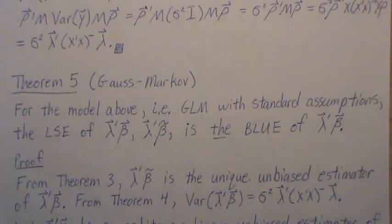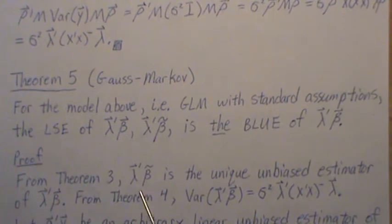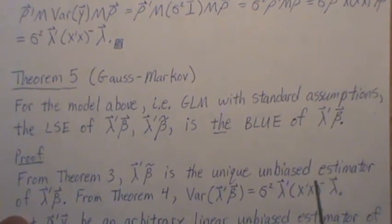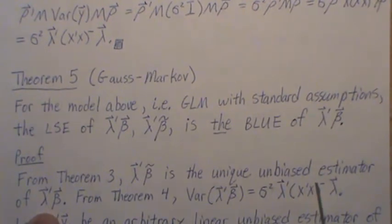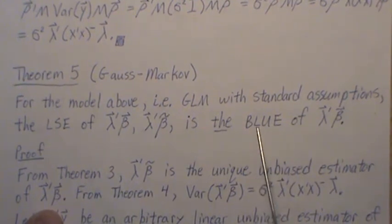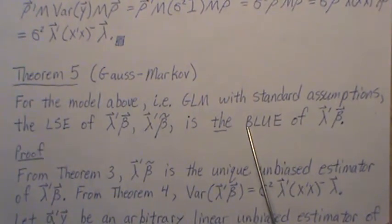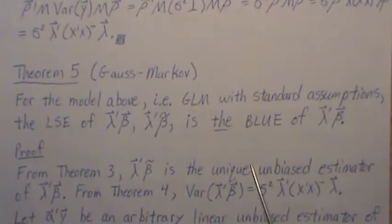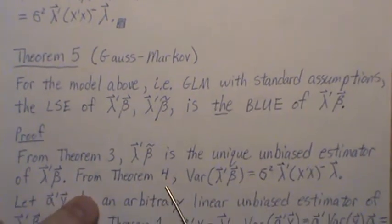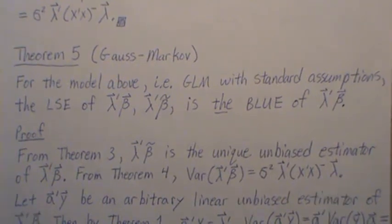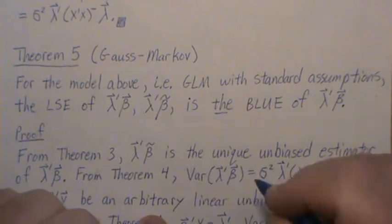We will prove that. From Theorem 3, we know that lambda prime beta tilde is the unique unbiased estimator of lambda prime beta. But the best in BLUE, the linear means it's a linear combination, unbiased estimator, BLUE means it has the smallest variance. That's the important piece of Gauss-Markov. From Theorem 4, we know the variance of this linear combination is this, and that should be a tilde.